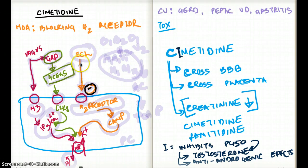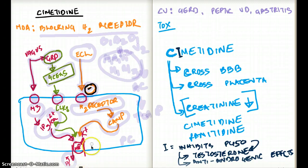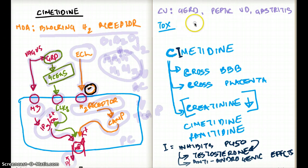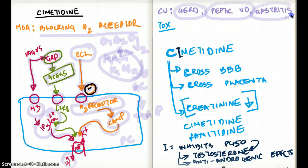Now let's talk about the clinical use of cimetidine. The whole point is that cimetidine decreases the level of protons, so we use it in diseases where we want less acid secreted into the stomach. The three very common examples are GERD (gastroesophageal reflux disease), peptic ulcer disease, and gastritis.